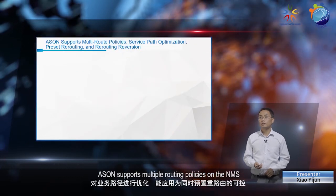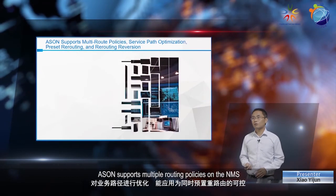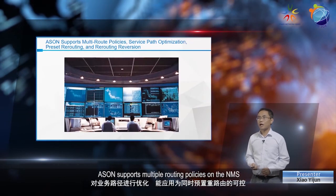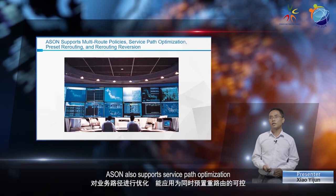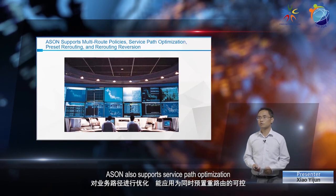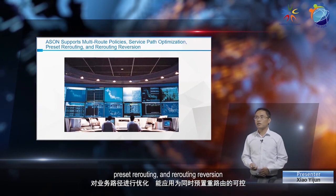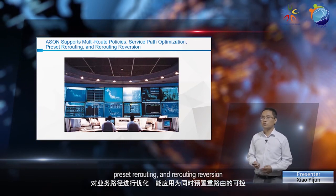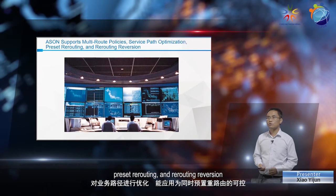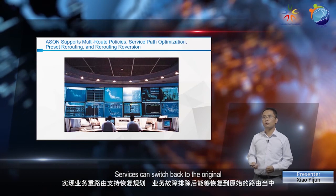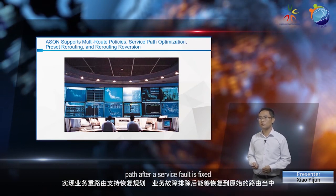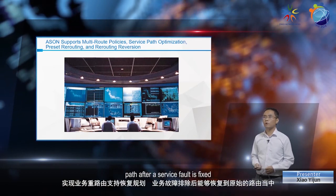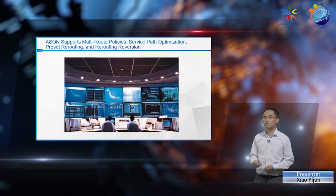ASAN supports multiple routing policies on the NMS. ASAN also supports service path optimization, preset rerouting, and rerouting reversion. Services can switch back to the original path after a service fault is fixed.